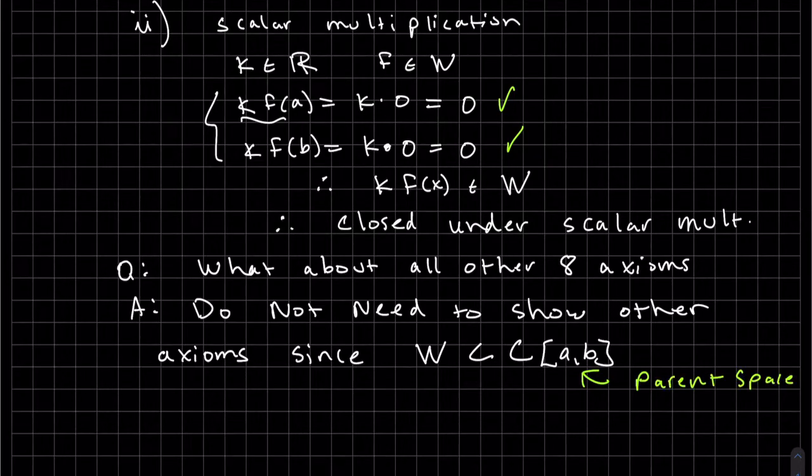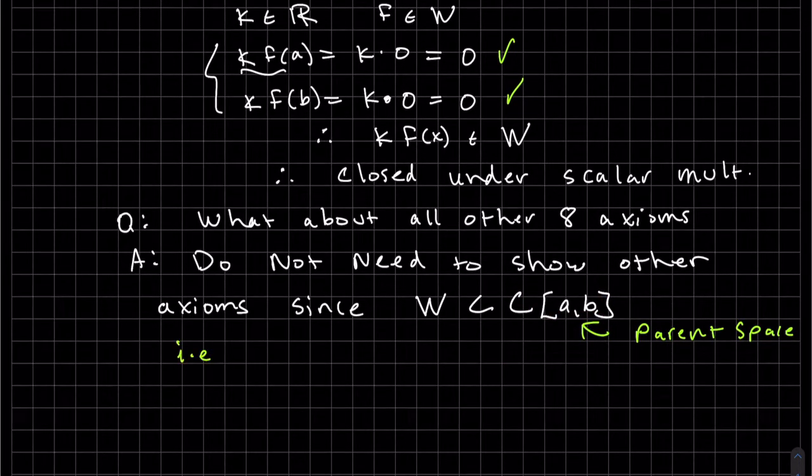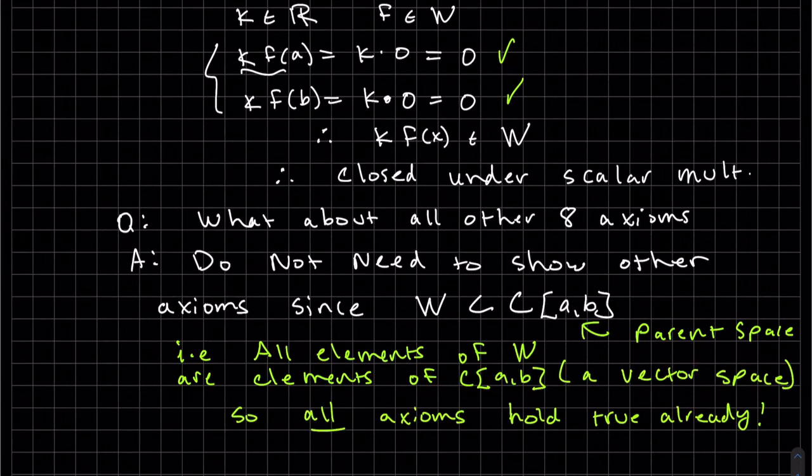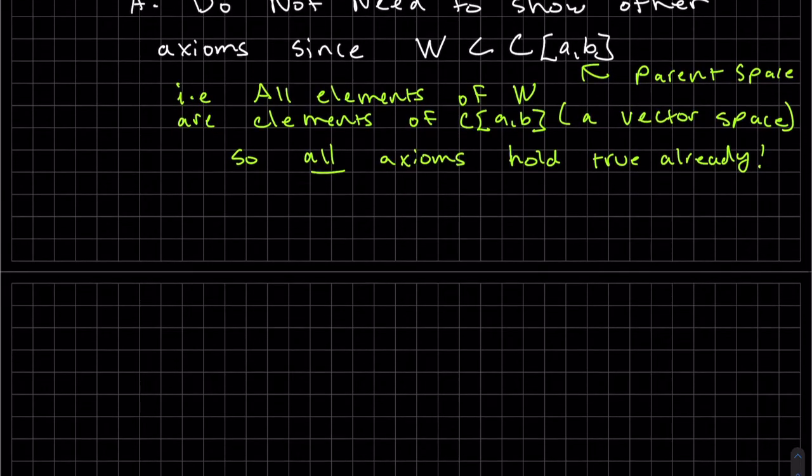Since W is a subset of a parent space, that means all the elements in W will satisfy all the axioms. So we don't need to show it.